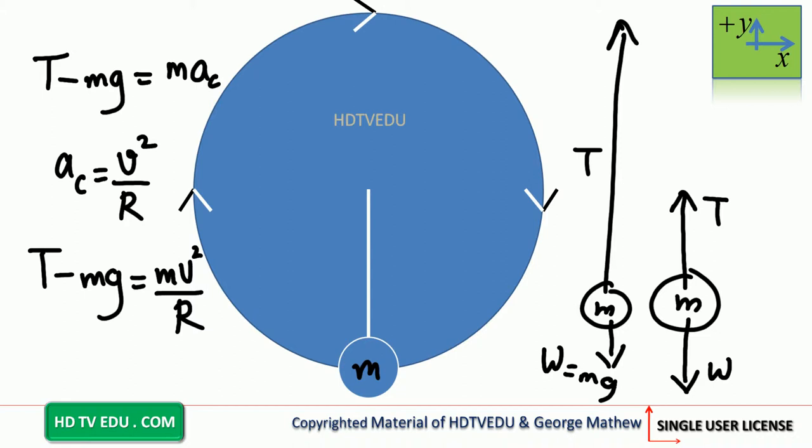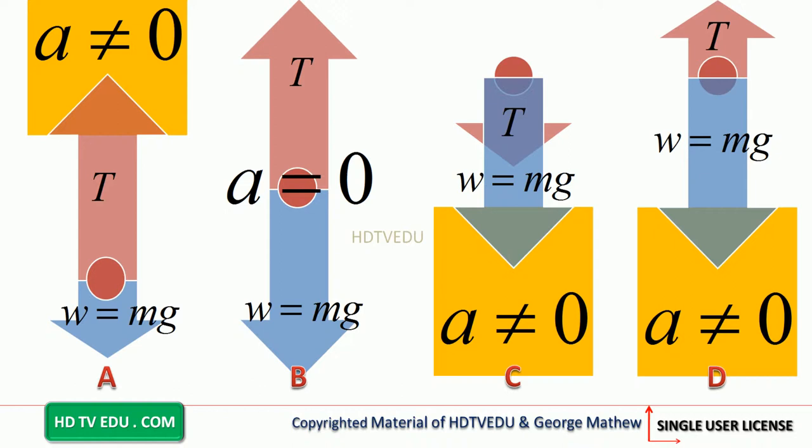What is T? Tension in Newtons. What is m? Mass of the object in kg. What is g? Acceleration due to gravity in meters per second per second. What is v? Speed in meters per second. And what is r? The radius of the circle in meters.